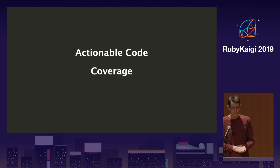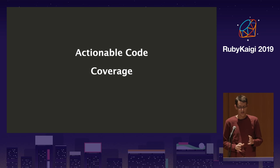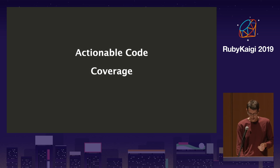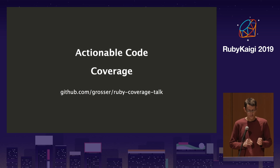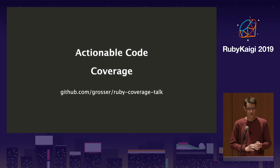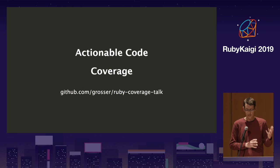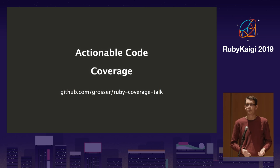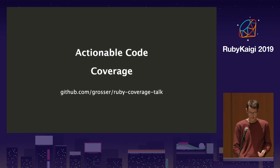Welcome to Actionable Code Coverage. This is a talk about code coverage and its limitations. It's also a repository with runnable examples that shows you step-by-step how this was done, with markdown slides so you can modify them or present elsewhere. It's meant as a deep dive for new developers to explain how we develop, how we test, and how we use coverage.